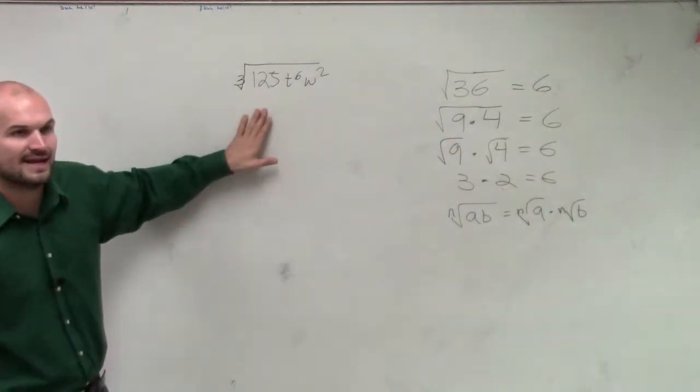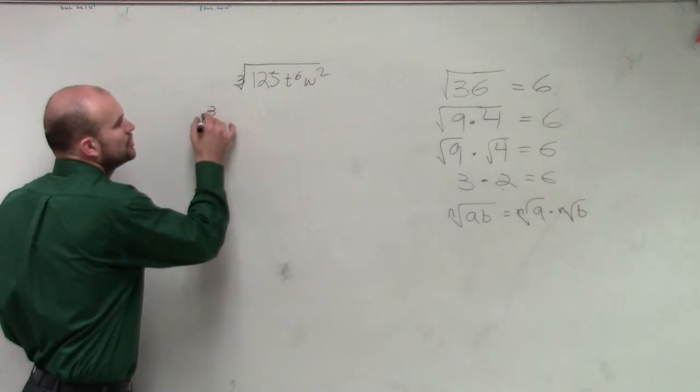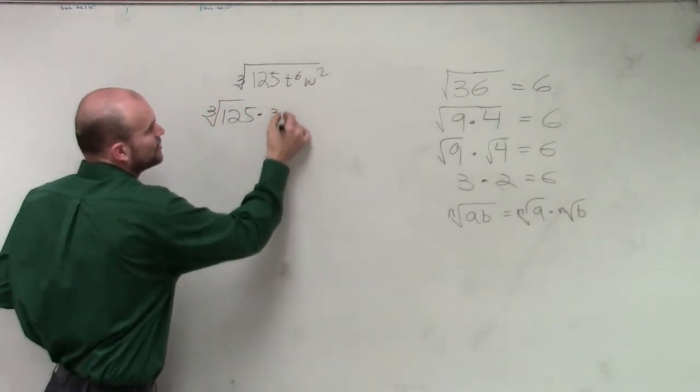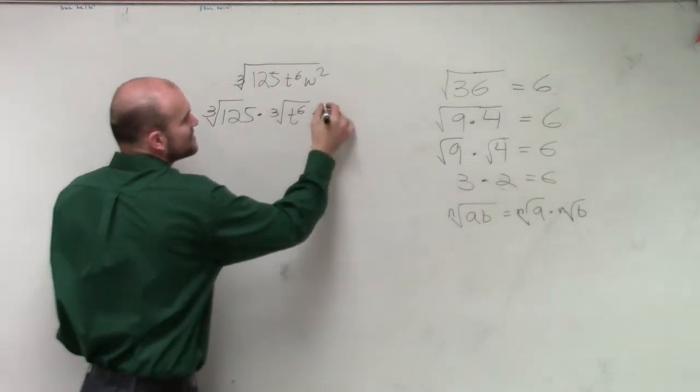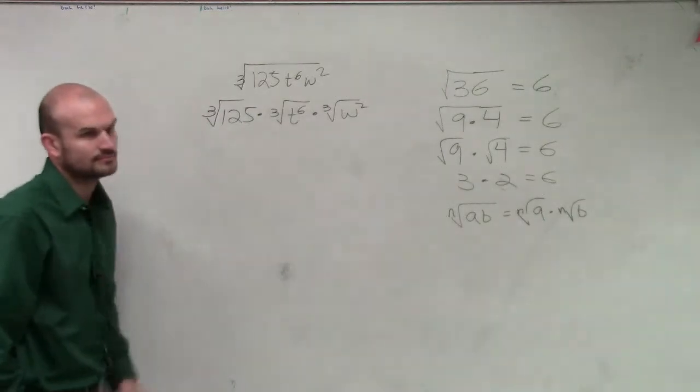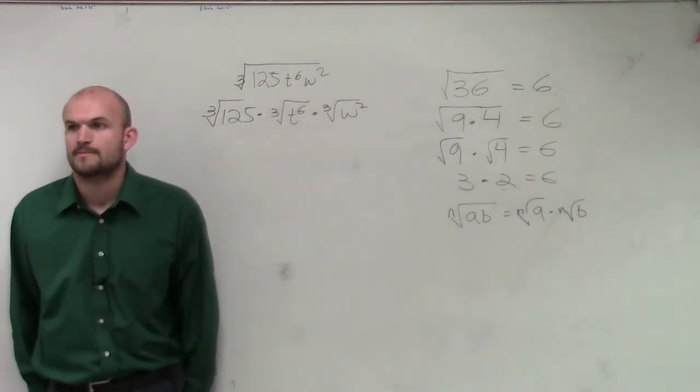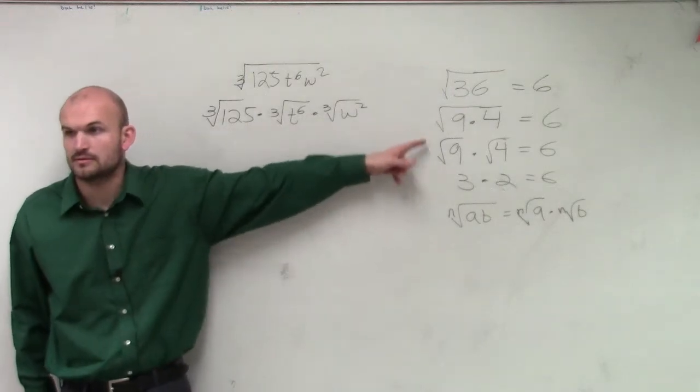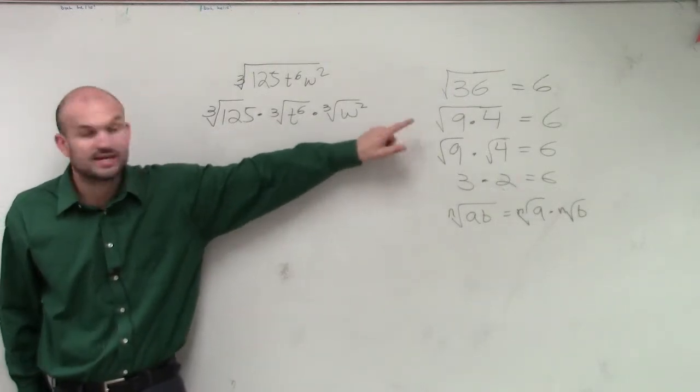So what they're saying is I can break this up into the cube root of 125 times the cube root of t to the sixth power times the cube root of w squared. This works, right? Do you understand from here to here? Do you believe that's true?